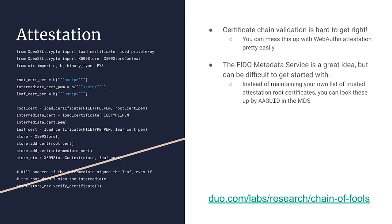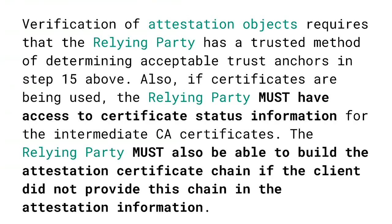If you are going to use attestation and make policy decisions about authenticator types, make sure you pay close attention to certificate chain validation. We published research surveying widely used cryptographic libraries and found that some APIs for doing certificate chain validation can be non-obvious at best, and sometimes result in implementation issues where untrusted intermediates are treated as trusted roots. There's also the FIDO metadata service, which lets you do a lookup of an AAGUID to retrieve the certificate for an authenticator. But there's still actual verification that needs to happen correctly — the spec notes you must also provide certificate status information and build the attestation certificate chain if the client doesn't provide the full chain.